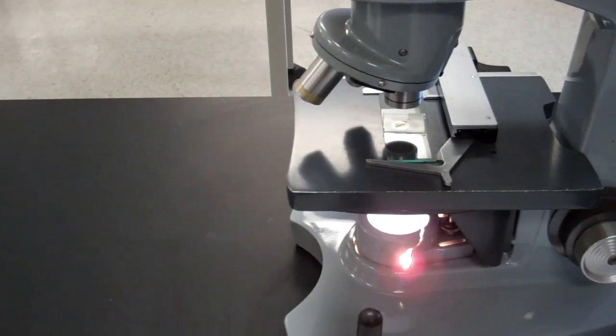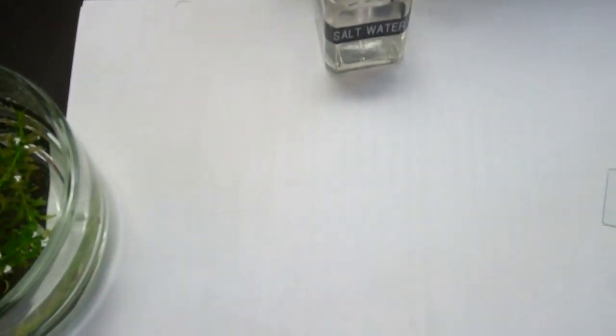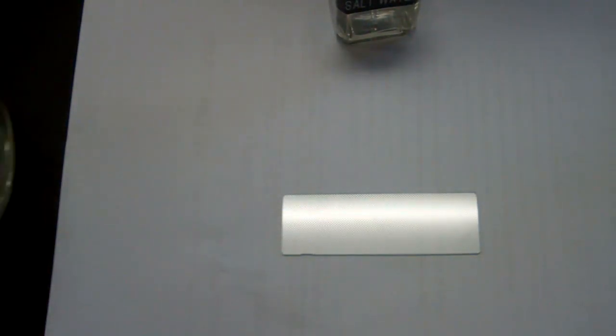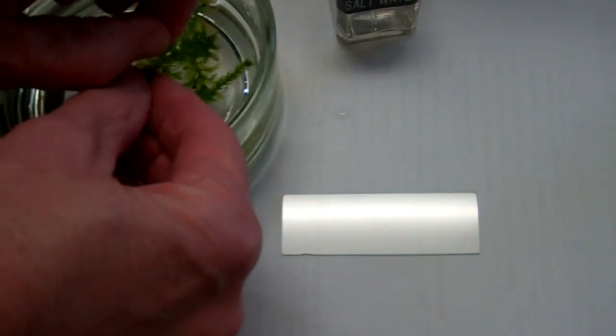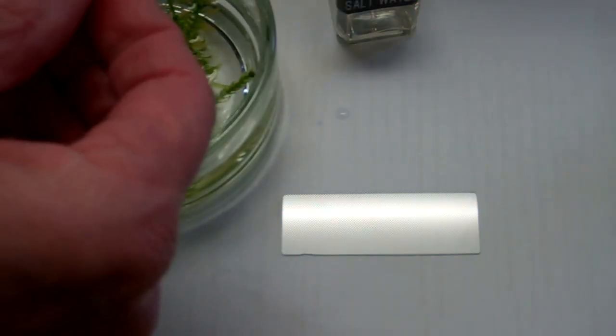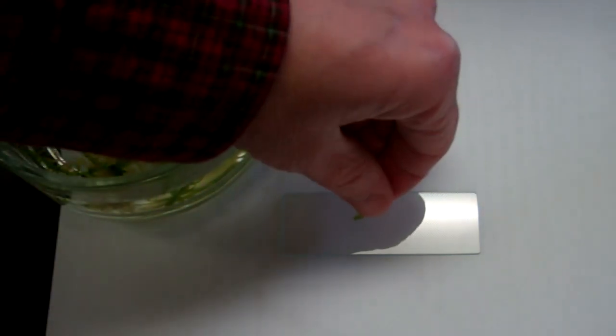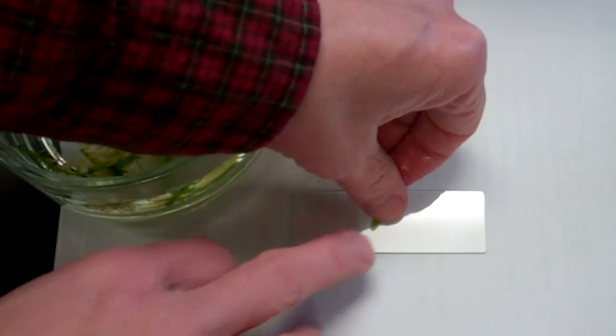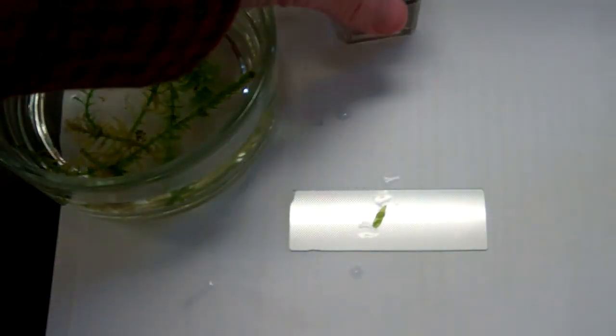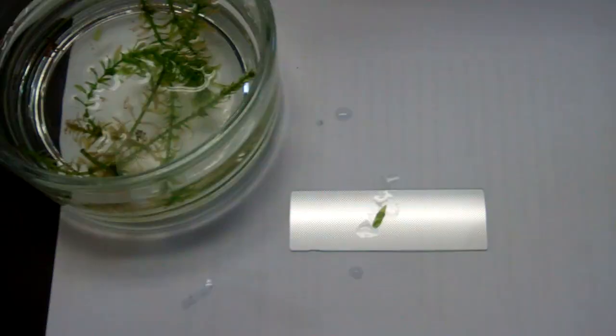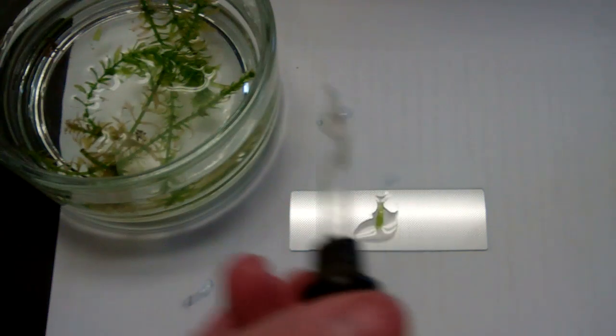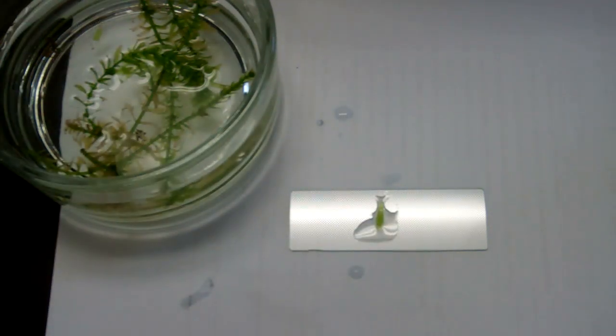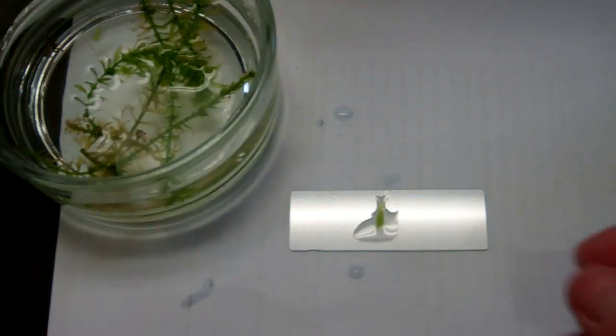Now, a different situation will be when you look at Elodea in salt water. So, again, we're going to take a slide and our Elodea leaflet. A little tiny leaf, single leaf. So thin that you can see through it. And now we're going to put salt water on this leaf. And this is not the normal type of water environment for this plant. And we put our cover slip on it.